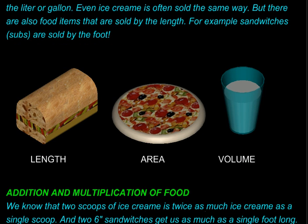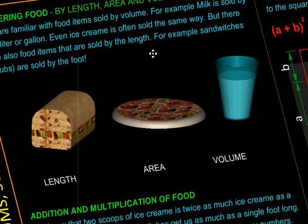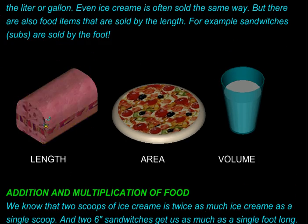Finally, getting back to our fast food scenario. As far as subs or sandwiches go and drinks go, the equation is pretty simple. Twice the length should cost you double. And twice the volume should also cost you twice. But when it comes to pizza, and if you want to compare the value of a 10 inch and a 20 inch pizza, then the 20 inch pizza should cost four times more.